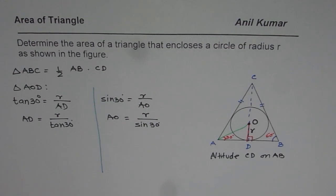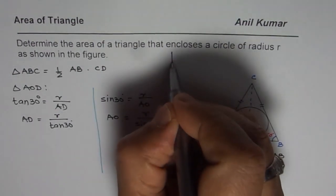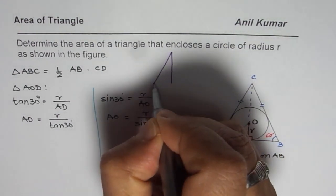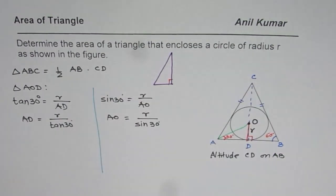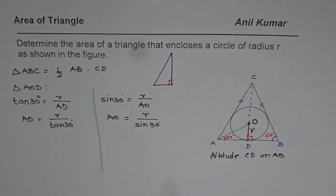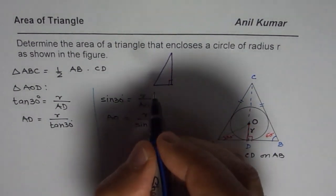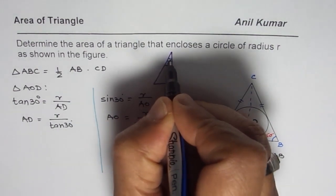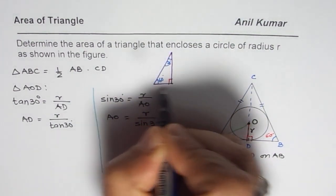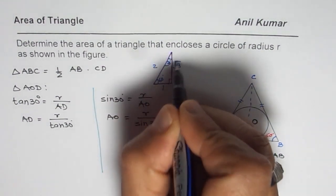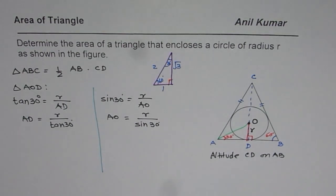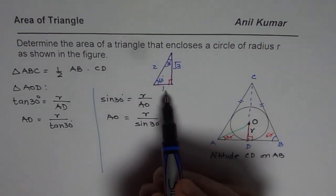Now to find sine of 30 degrees and tan of 30 degrees we have two options. Those of you who know special triangle they can use the special triangle which I am drawing here: 60, 30, 90. In the special triangle as you know the sides, this angle is 30 for us, the side ratio is 1, 2 and square root of 3. So you can use special triangle or you can use your calculator. Let's use special triangle for the time being.